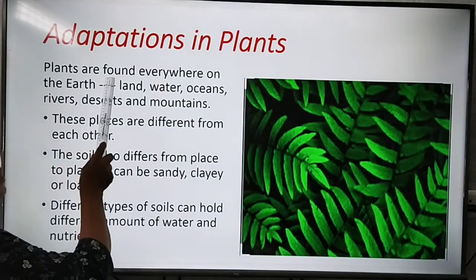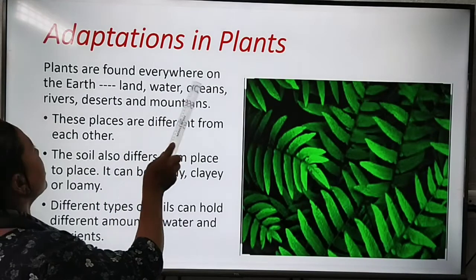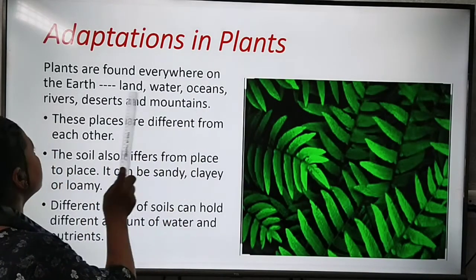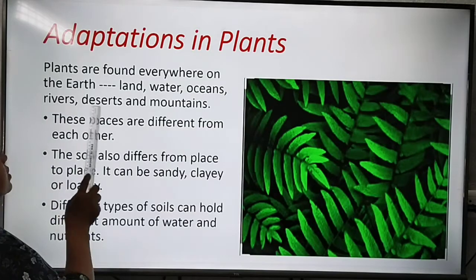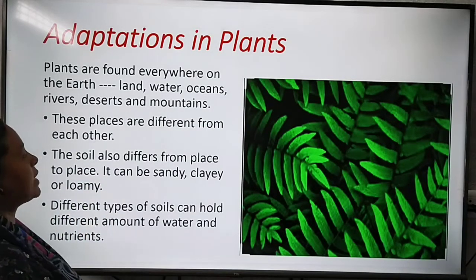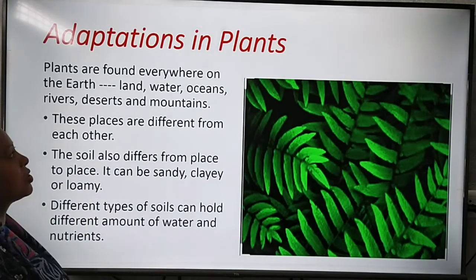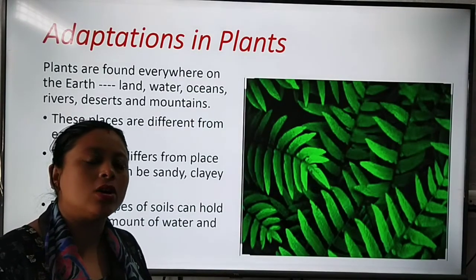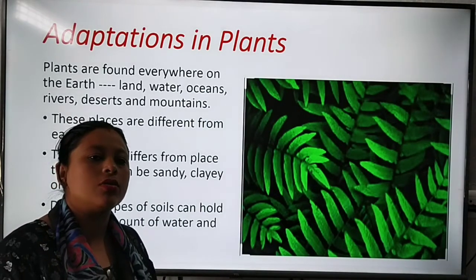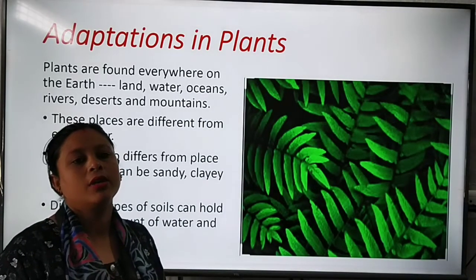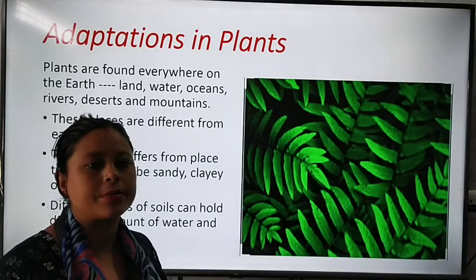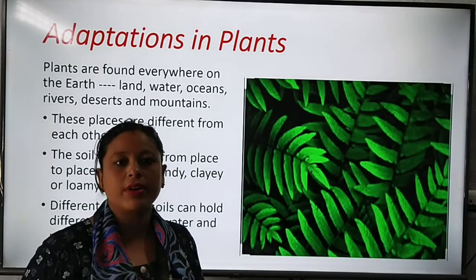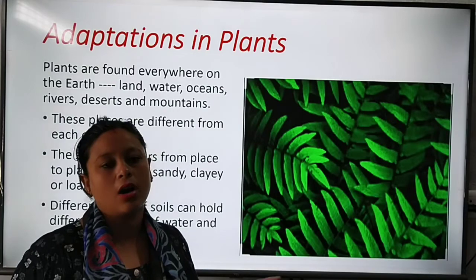Plants are found everywhere on the earth — land, water, oceans, rivers, deserts and mountains. We can find different types of plants near our surroundings on earth.